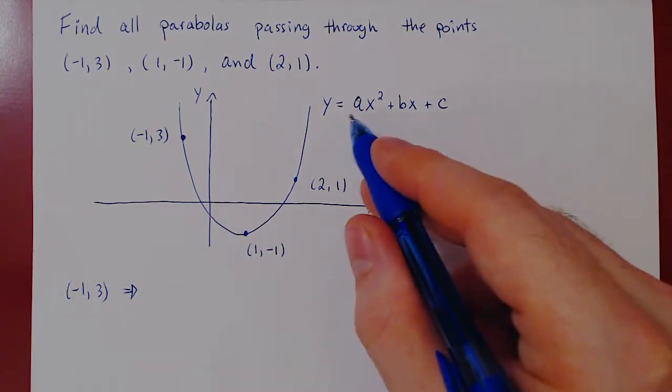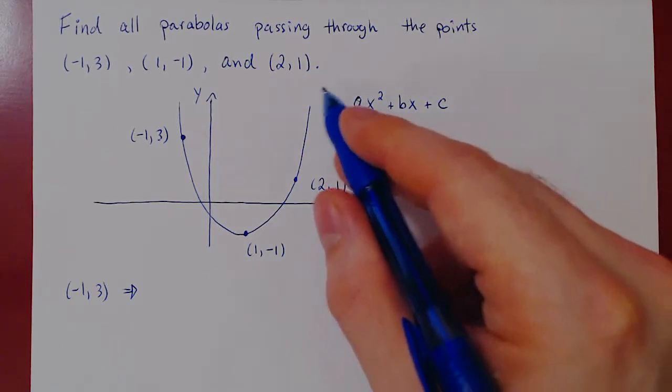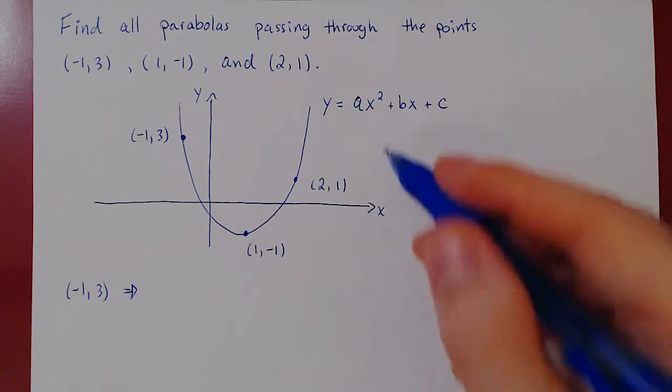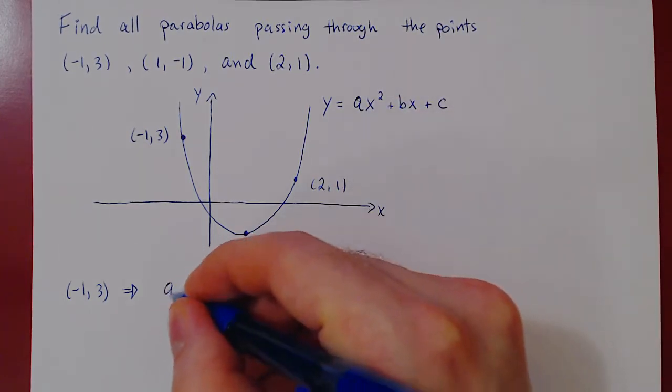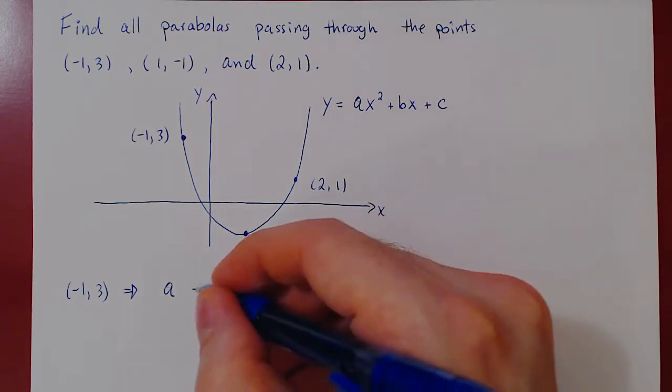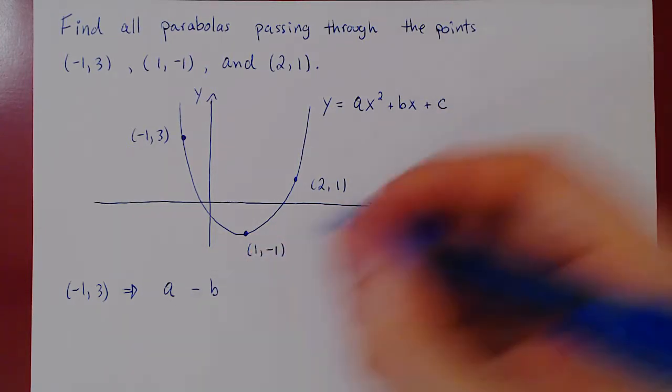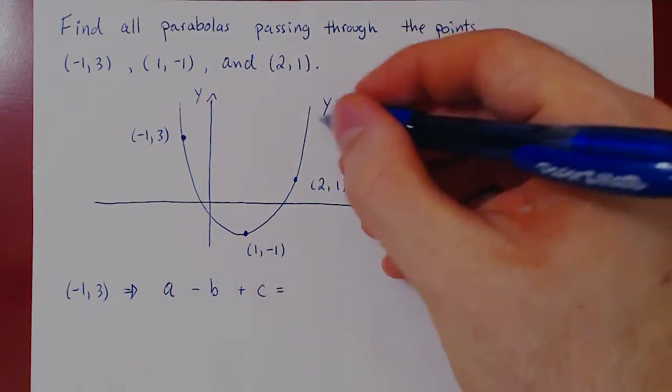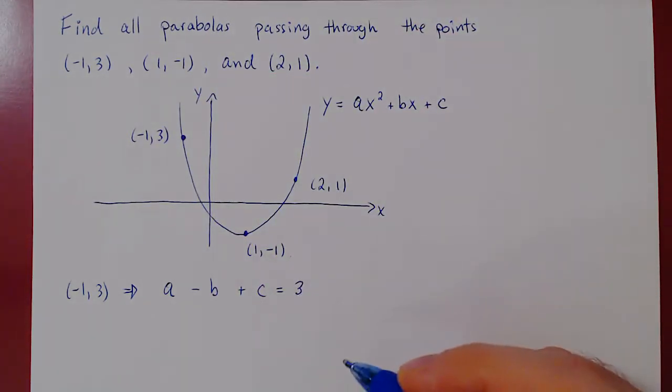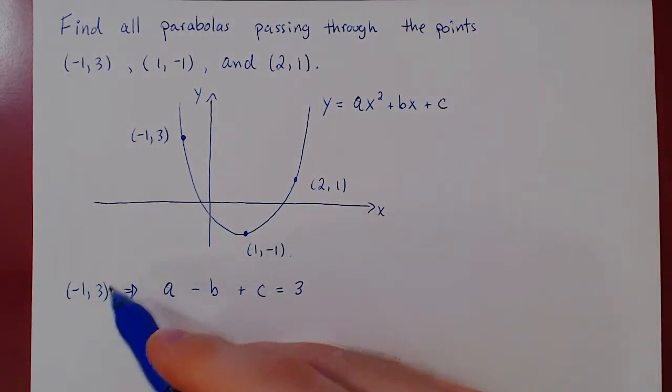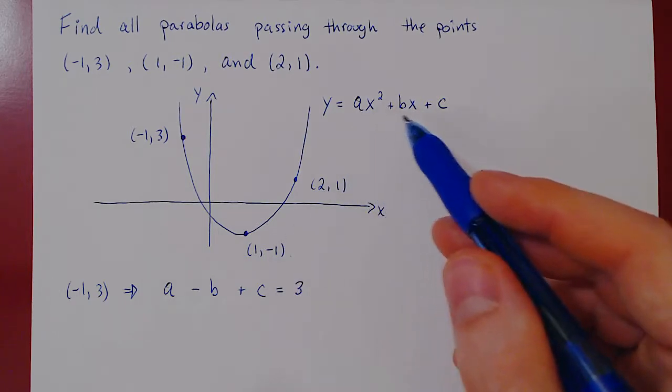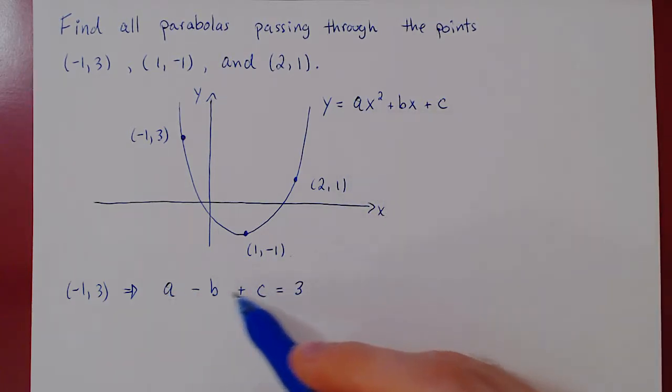As I said, I will write this part first, then equals the y value. It will be clear in a second. So we have a times negative one squared, which is one. Plus b times negative one, so minus b, plus c. That equals y, and for this point, y is positive three. So you see that the fact that this point is on the equation of our parabola means that the coefficients must satisfy this linear equation.